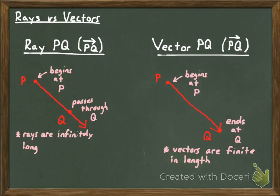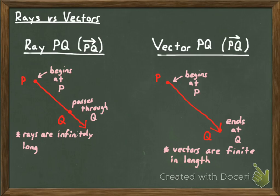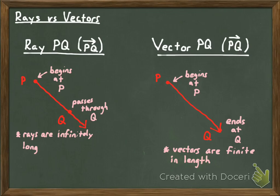The fact that vectors go a specific direction and have a specific length makes them great for translations. I mentioned notation a little bit ago. You're familiar with the notation for a ray where you put the initial point, then the terminal point — the point that it passes through — in that order, and then you put the little ray symbol right above it. With vector PQ, the notation is very similar, except that instead of an entire ray symbol, you only get the top half of the arrow. You still put the initial point first and the terminal point second, but the symbol is just half of the ray's symbol.